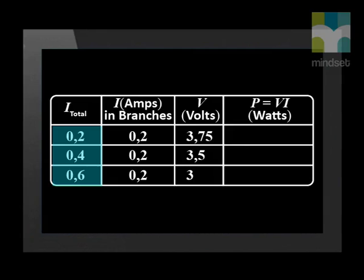Now let's analyze our results. Look at the table of results from the experiment. What do you notice about the ammeter readings as we add light bulbs in parallel? As we add more light bulbs in parallel, the current increases in the main circuit. Why do you think this happens?